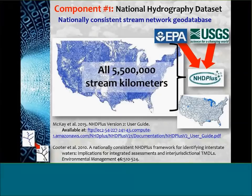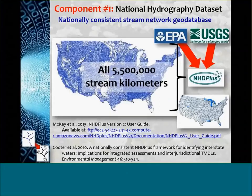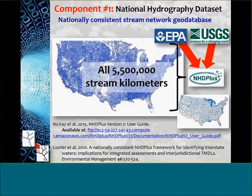Intercompatibility amongst all those things is really important if you're going to assemble this larger system from component parts. The first key component is the national hydrography dataset itself. Al and Tommy DeWold and others have been working on this particular project for almost a couple of decades to build a nationally consistent stream network geodatabase, and it's the foundation that everything else we're trying to do here rests upon.